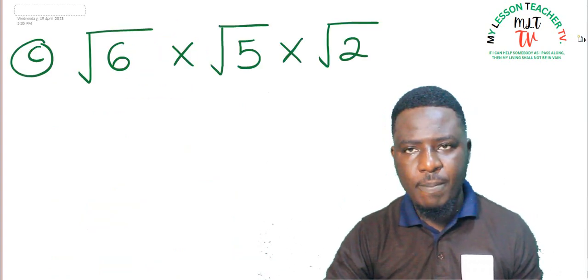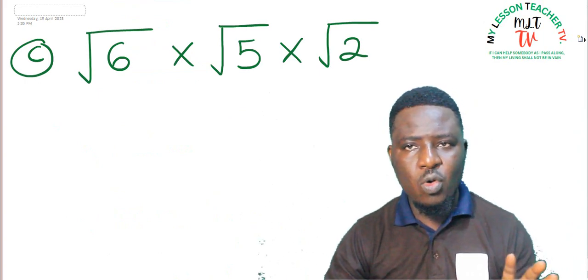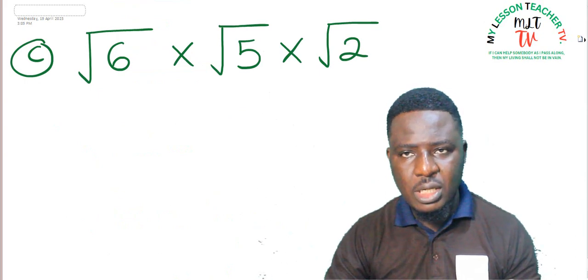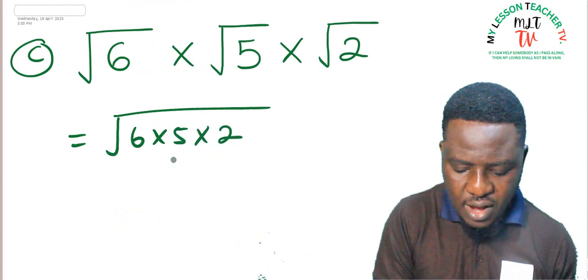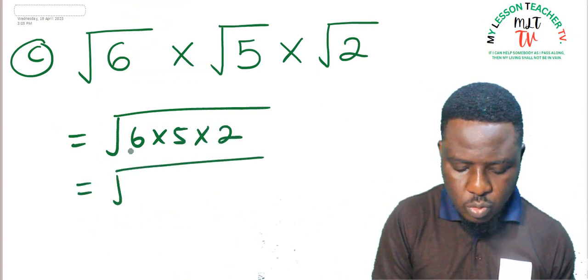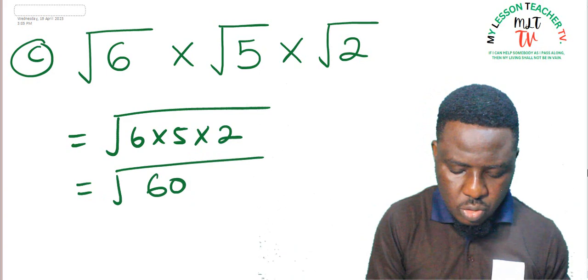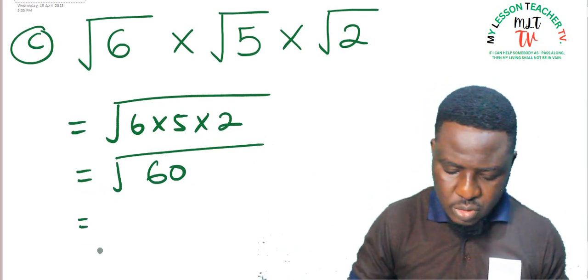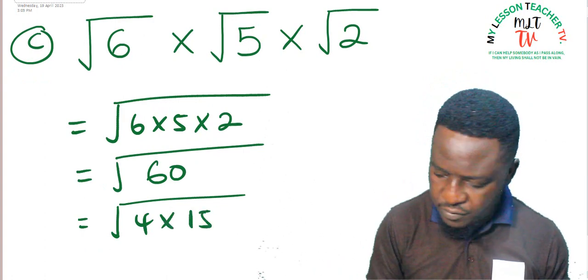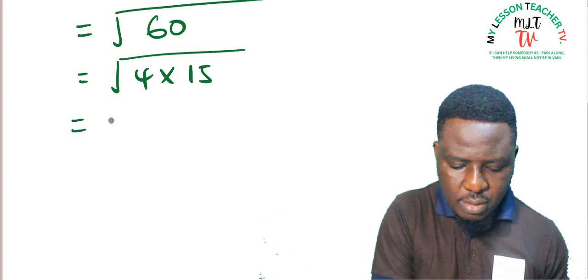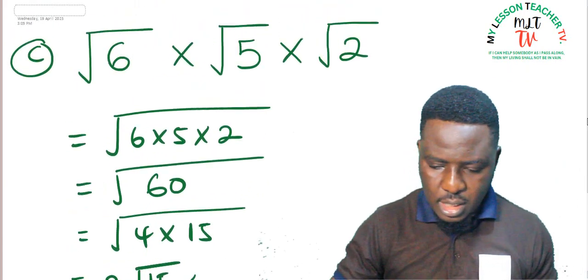Example C: root 6 times root 5 times root 2. They are all in their basic surd forms, so go ahead and multiply. This equals root 6 times 5 times 2 = root 60. Root 60 can be expressed as root 4 times 15 = 2 root 15. So your answer is 2 root 15.